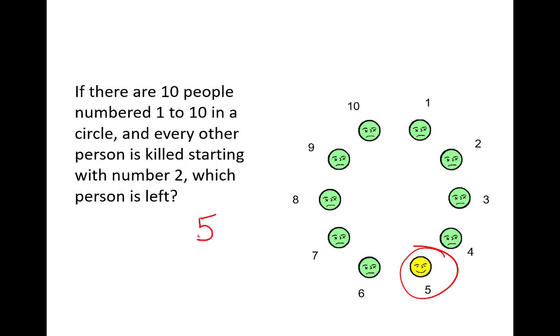Which person is left? In this game of Josephus, when there are ten people, person number five is the last to remain. We might give this a mathematical notation, say J of ten equals five. When there are ten people, position five is the last one that remains.